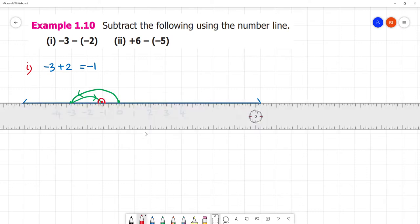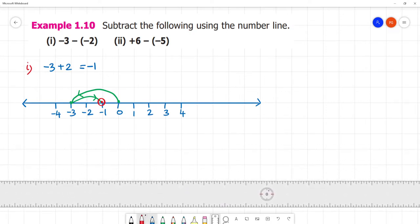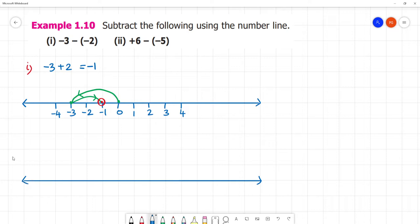Next, second one: minus 6 - sorry, plus 6. Minus into minus, that is plus 5. So 6 plus 5 is 11, right?